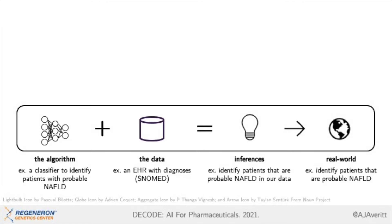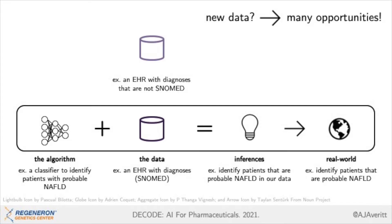To put a finer point on this, let's suppose that we have a classifier to identify patients with probable non-alcoholic fatty liver disease, or NAFLD, from an electronic health record, or EHR, with diagnoses that are coded in SNOMED. From this, we want to learn which patients in our data likely have NAFLD, and then extrapolate beyond our data to identify others with likely NAFLD. Now, let's say a new data source arises — another EHR, but coded in something other than SNOMED. A secondary data source allows us to understand how our model and data interact with each other, to yield the inferences that we rely so heavily upon. It also helps us understand how the inferences we make relate to the real world, and assessments such as these really cannot be completed well in the absence of other datasets.